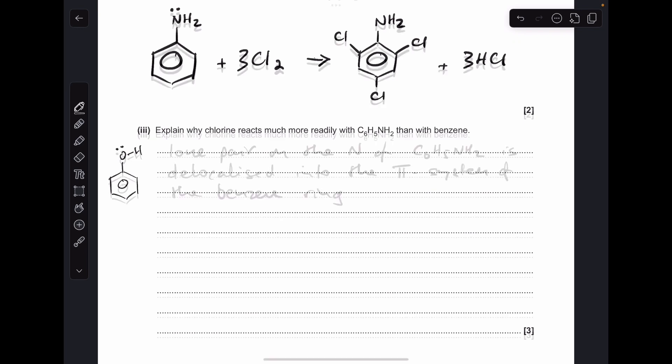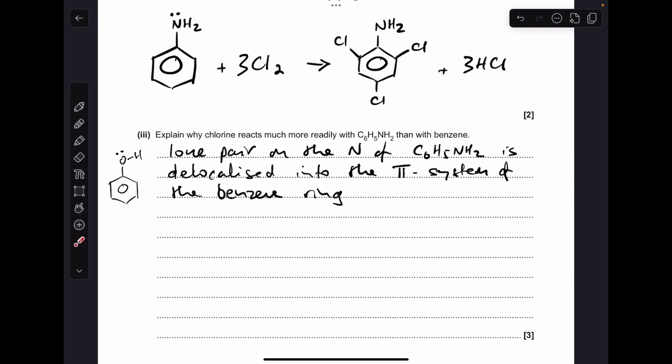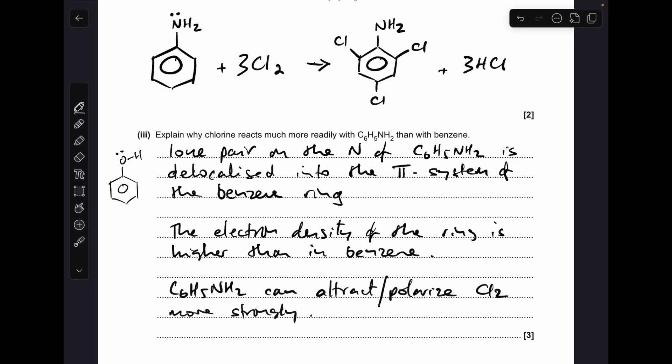In terms of what to write, we just need to start by saying a lone pair on the nitrogen of the phenylamine is delocalized into the pi system of the benzene ring. That makes the electron density of the ring higher than in benzene alone. Then just finish off by saying phenylamine can therefore attract, or you could say polarize, the chlorine molecule more strongly.